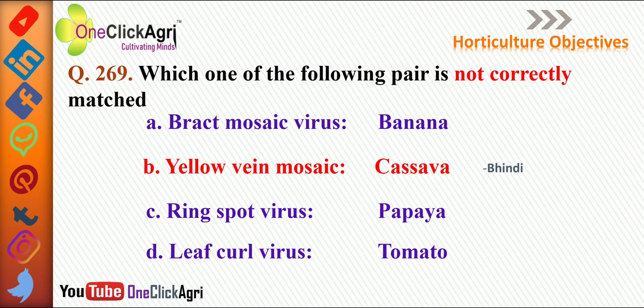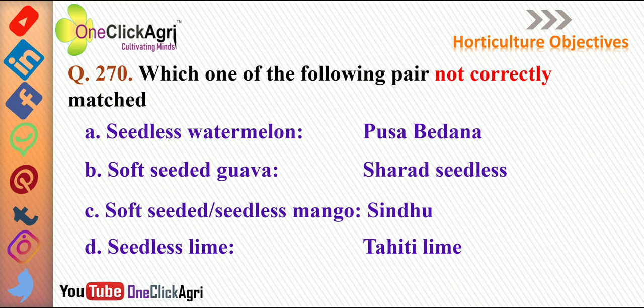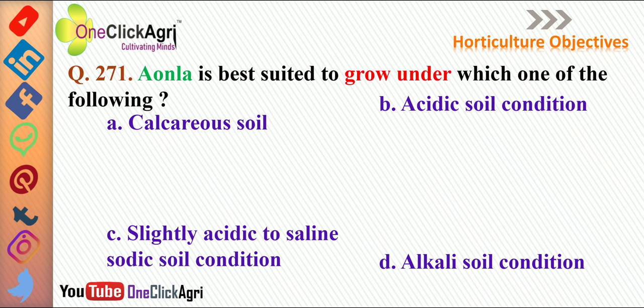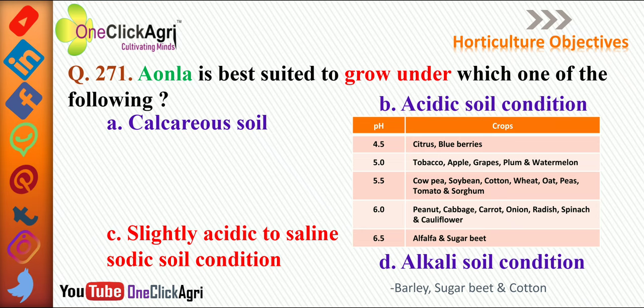Next question: Which one of the following pairs is not correctly matched? The right answer is 'soft seeded guava,' because Arka Mridula is a variety of guava with soft seeds, and Sharad Seedless is a variety of grapes. Next question: Amla is best suited to grow under which condition? The right answer is slightly acidic to saline sodic soil condition. A chart showing pH ranges and corresponding crops is presented.